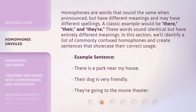Homophones are words that sound the same when pronounced but have different meanings and may have different spellings. A classic example would be words that sound identical but have entirely different meanings. In this section, we'll identify a list of commonly confused homophones and create sentences that showcase their correct usage. Example sentences: 'There is a park near my house.' 'Their dog is very friendly.' 'They're going to the movie theater.'